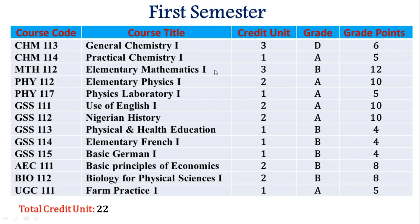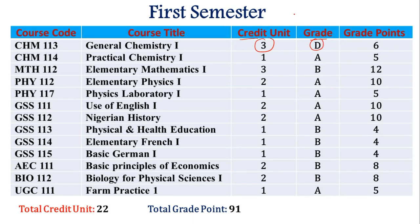First, you should know your course codes, the titles, and most importantly for your CGPA: the credit units of each course and the grade you scored at the end of your exam. In our grading system in Nigeria, A has a grade point of 5, B is 4, C is 3, D is 2, E is 1, and F is 0.